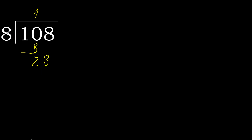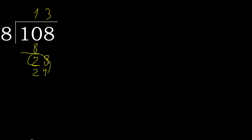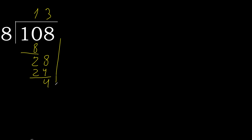28. 8 multiplied by 4 is 32 — that is greater. Multiply by 3 gives 24, which is not greater. Subtract: 28 minus 24 is 4. Next.